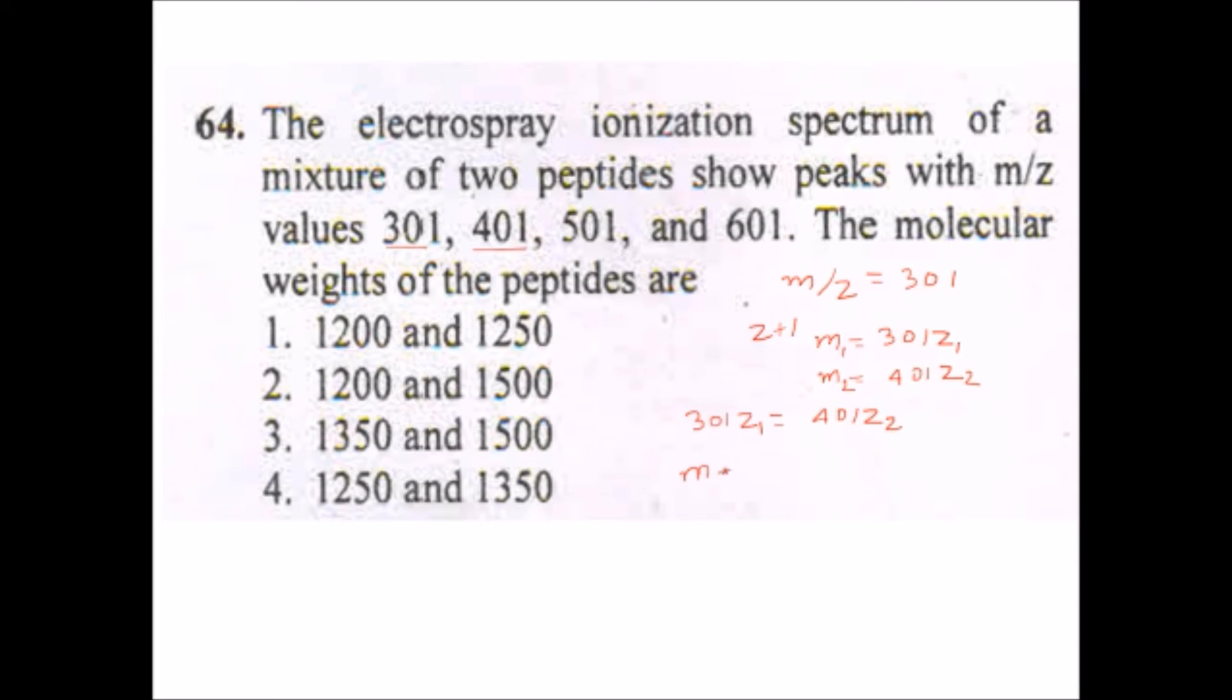Now we have to calculate the charge. In calculation of the charge, suppose for taking m1 and m2 which are equal - suppose m1 is differed by one charge - so we can say m plus 1 is equal to 301z plus 1, and the m2 is 401 into z. As these two masses are equal, so we can also simplify this as equation 1.